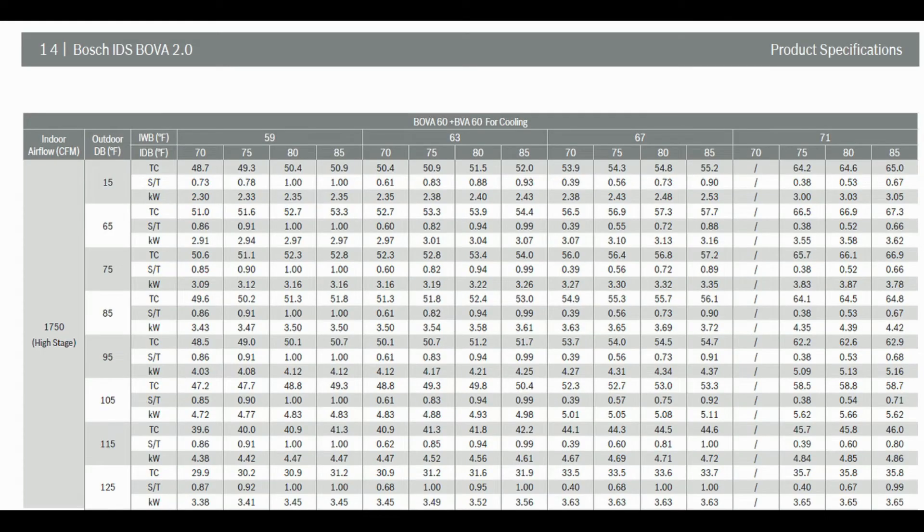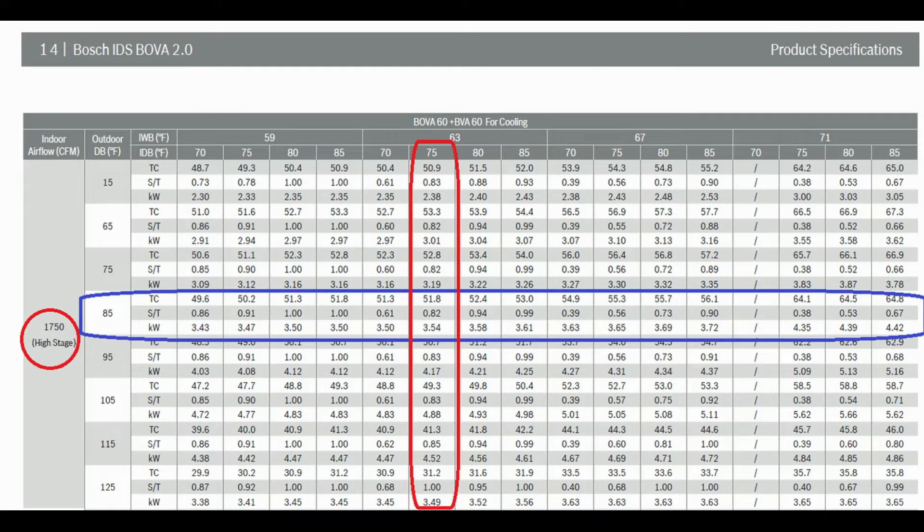Now we'll just jump right in and we should start with product specifications. You should be able to download this or request this. We should be able to get this out to you on how the unit operates. In this example, we're seeing at high speed, in this case, 1,750 cubic feet on the 5-ton unit. 85 degree outdoor temperature and a 75 indoor with a 63 wet bulb. Our expectation should be 51,800. We also see that gives us a sensible to total ratio of 0.82 and that's showing us that 82% of the cooling BTUs are used for sensible and 18% are going to be used for the latent removal.